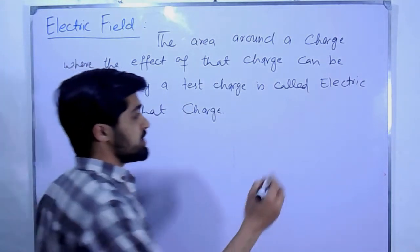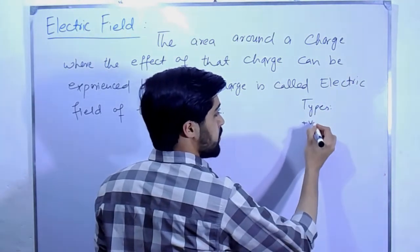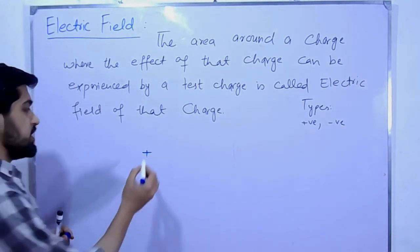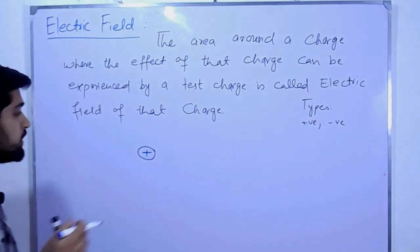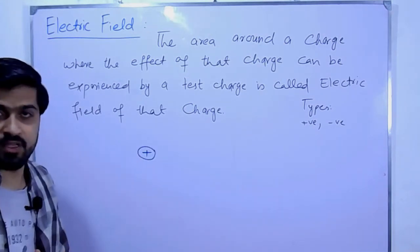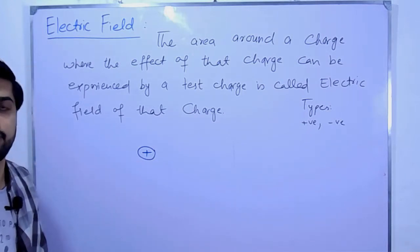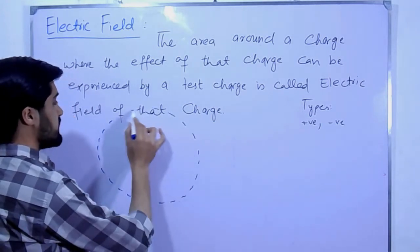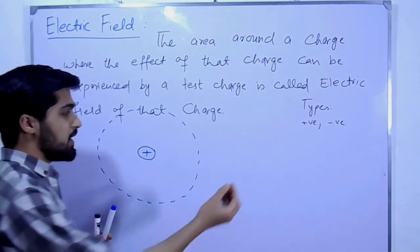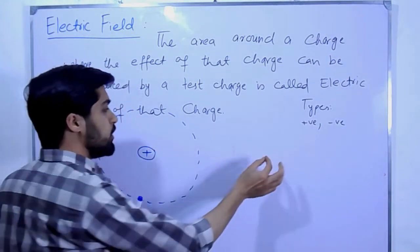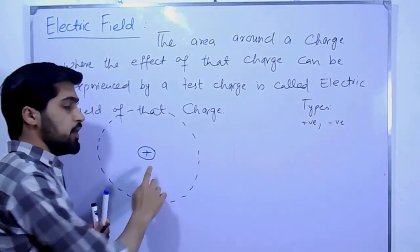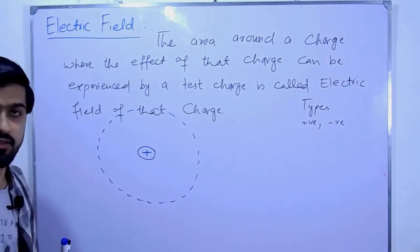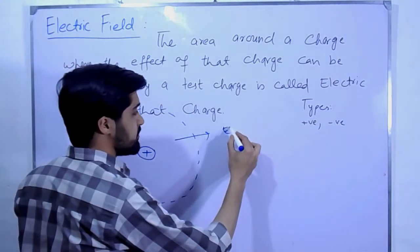Charge کے دو types ہیں: positive charge اور negative charge۔ جو ہمارے پاس charges ہوتے ہیں تو ان کے اردگرد ایک region ہوتا ہے جس میں اس charge کا effect ہوتا ہے۔ اس effect کو ہم observe کر سکتے ہیں اگر کوئی دوسرا test charge ہو جسے ہم positive consider کرتے ہیں اور اس field میں لے آئیں۔ جس region میں اس charge کا اثر موجود ہے اسے ہم electric field کہتے ہیں۔